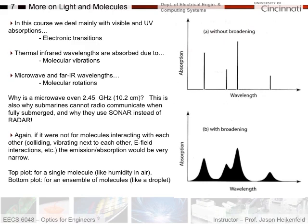These plots show absorption versus wavelength without broadening for maybe a single water molecule, out in the gigahertz frequency range. When you bring a bunch of water together, they all interact and the spectrum broadens out, so you lose the ability to find transmission windows because there's always some absorption.